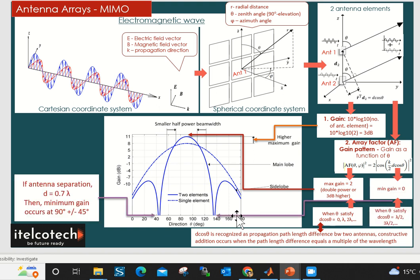And also we have certain points where the gain will be zero. That's how the beam is being formed. Let's see this by an example.